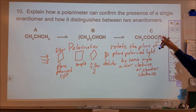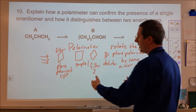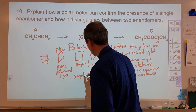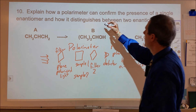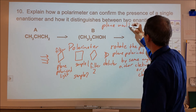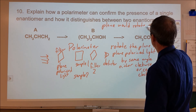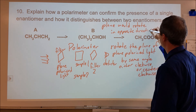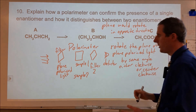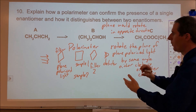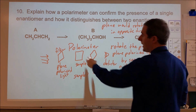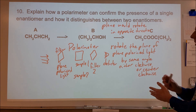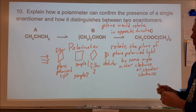How does a polarimeter distinguish between two enantiomers? If sample one is enantiomer one, the plane of polarized light will rotate in one direction. If we put enantiomer two in, the plane will rotate in the opposite direction. For example, if the R enantiomer — the D form — causes a clockwise rotation, then the S enantiomer will cause a counter-clockwise rotation. The polarimeter distinguishes the two enantiomers by the directionality of the rotation needed to return the reading to zero.